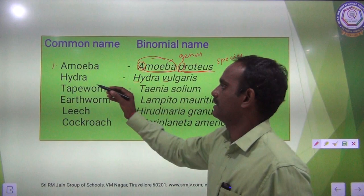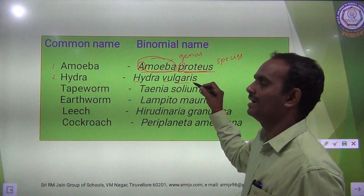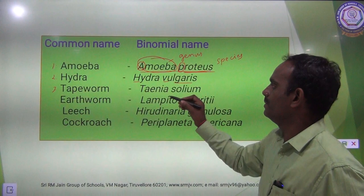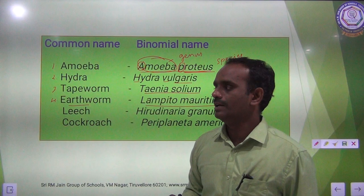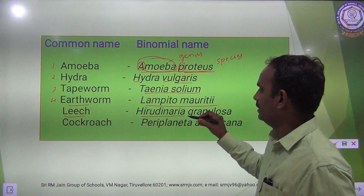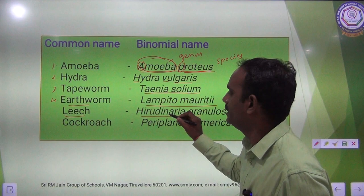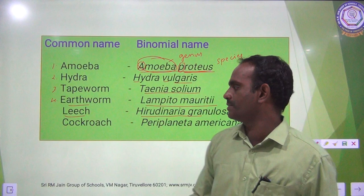The second one is Hydra — common name Hydra, binomial name Hydra vulgaris. Third one is Tapeworm — binomial name Taenia solium. Fourth one is Earthworm — binomial name Lumbricus terrestris. Fifth one is Leech — binomial name Hirudinaria granulosa. And the sixth one is Cockroach — binomial name Periplaneta americana.